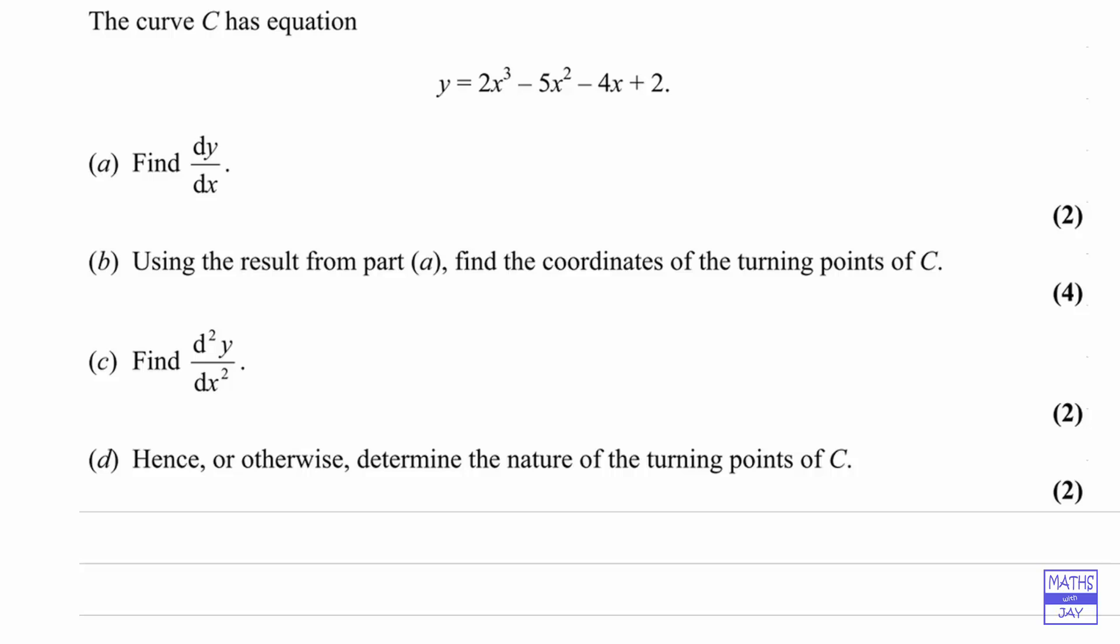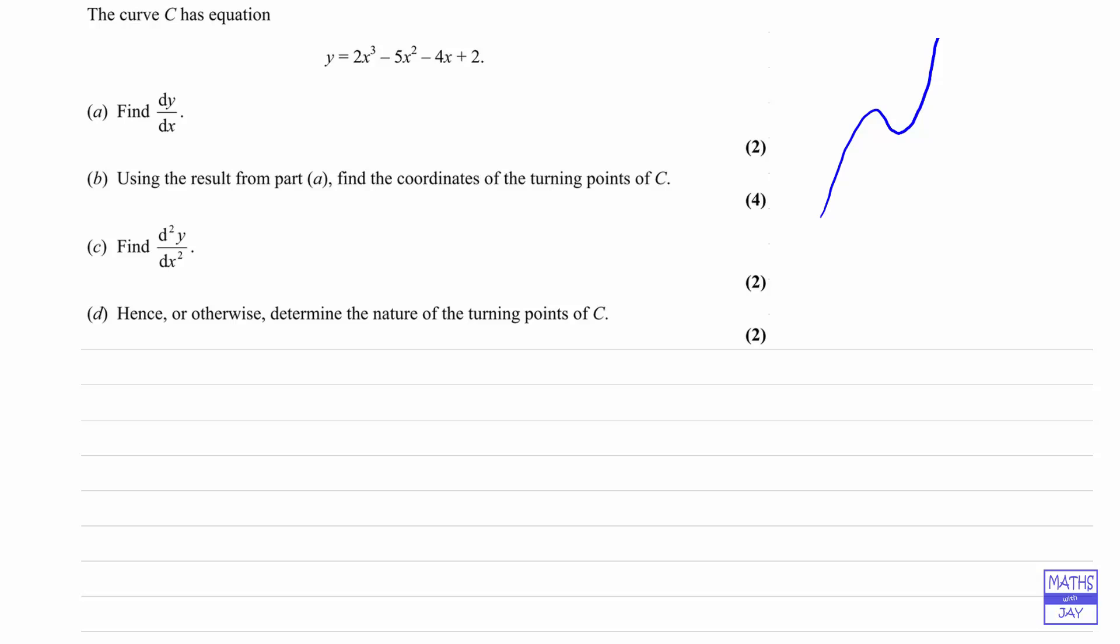Now the important thing to look at is the sign of the coefficient of x cubed. We see that it's positive, and that tells us which way around the cubic curve is going to be. When x is very large and positive, y will be very large and positive, and similarly when x is very large and negative, y will be as well. So we're expecting the curve to look like this. We can see that there are two turning points there, and we're expecting to find that the smaller turning point is a local maximum, and the bigger value of x will give us a local minimum.